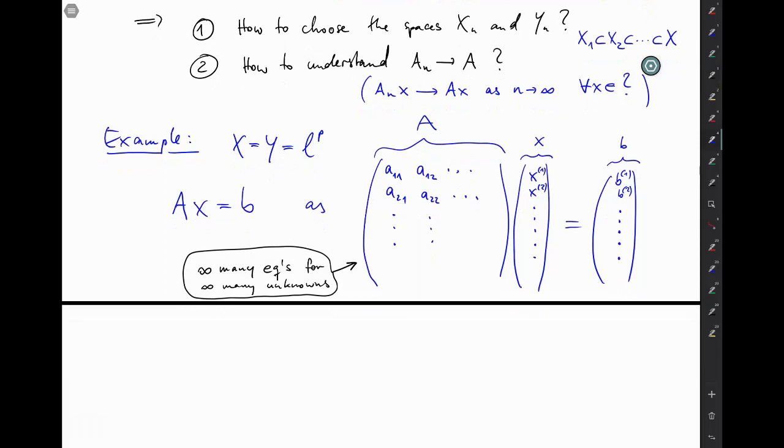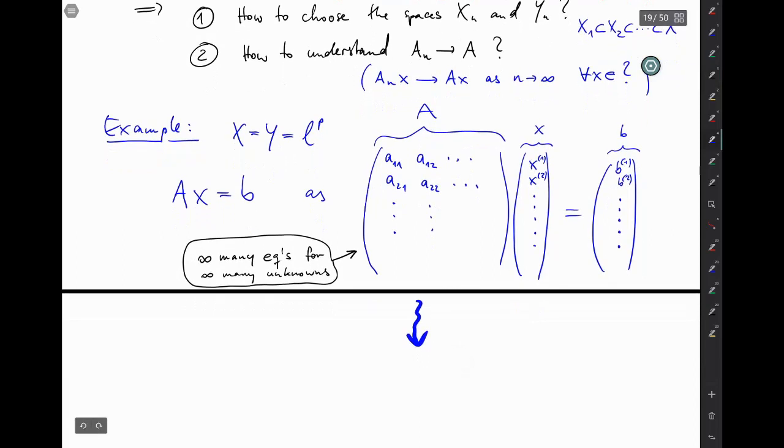What you want is you want to reduce this problem into a linear problem that has finitely many equations for finitely many unknowns. And to make this system fair, you should of course have the same number of equations and unknowns, let's call it little n.